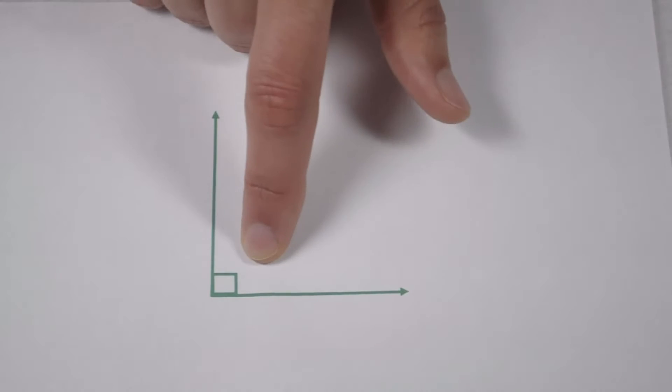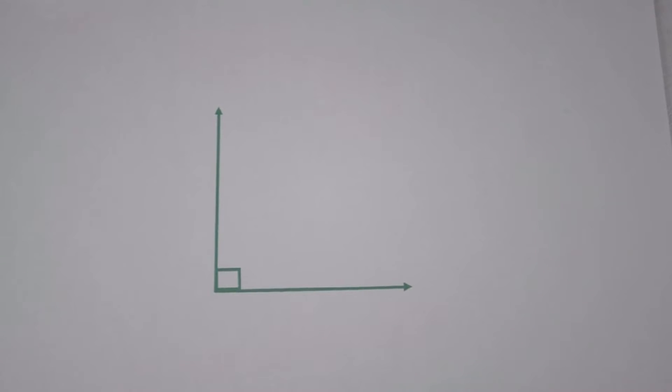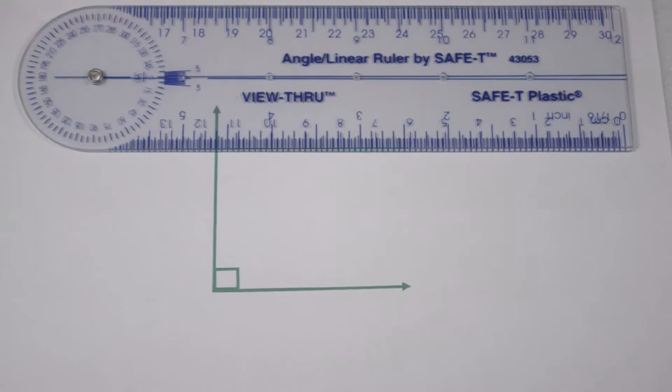We can see looking at our angle that most likely is going to be a right angle. If we want to measure and know for sure, one tool we can use is an angle ruler.